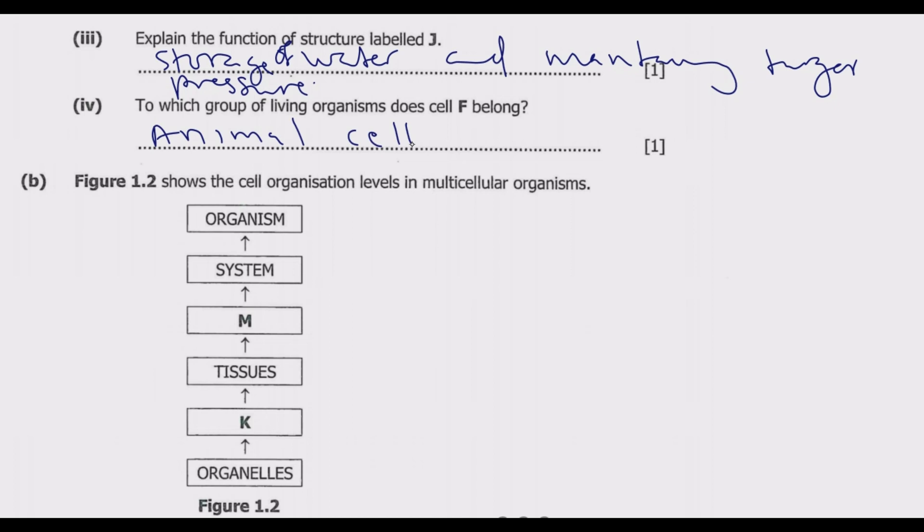So we are starting from the bottom where we have the smallest unit, which is the organelles. Organelles are cellular components that perform specific functions within the cell. Then we have K. From K, then we move to tissues. Tissues are groups of cells that work together and have a similar structure and function.